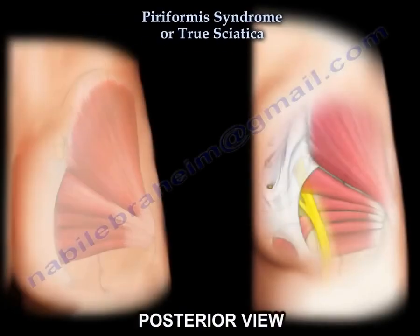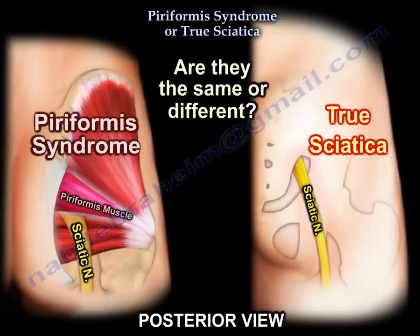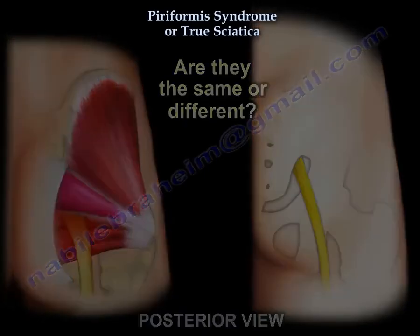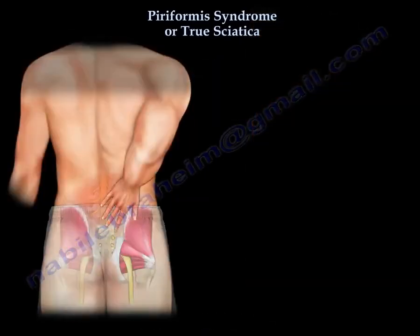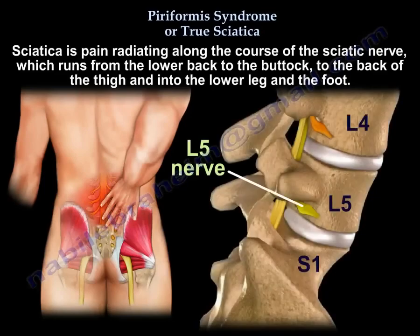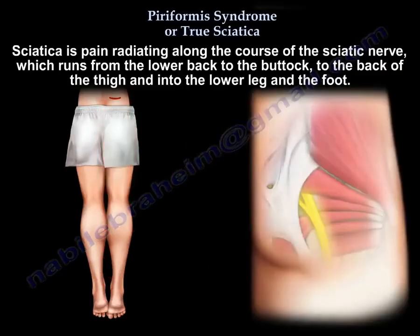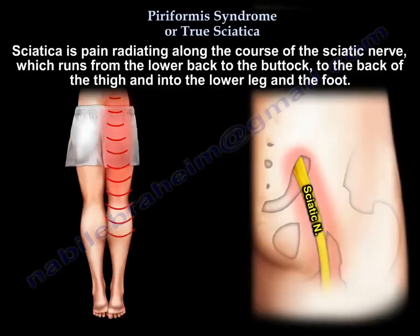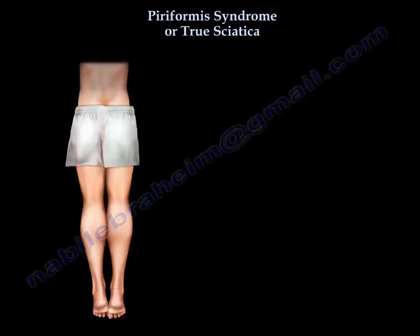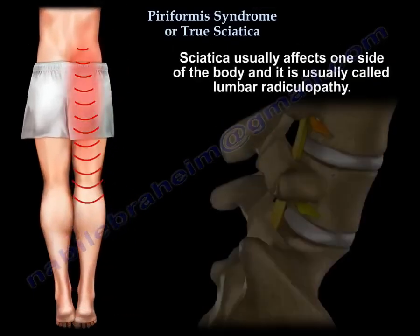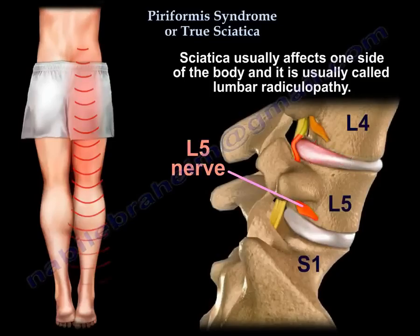Piriformis syndrome or true sciatica — are they the same or different? Sciatica means pain radiating along the course of the sciatic nerve, which runs from the lower back to the buttock, the back of the thigh, and into the lower leg and foot. It usually affects one side of the body and is commonly called lumbar radiculopathy.